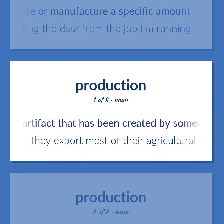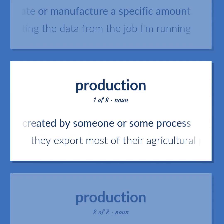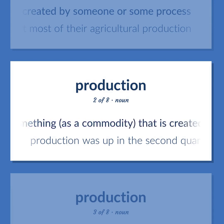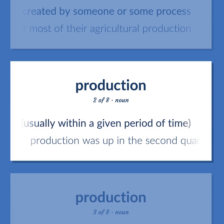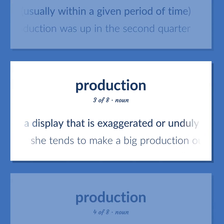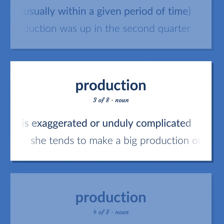Production: an artifact that has been created by someone or some process — 'They export most of their agricultural production.' Also, the quantity of something, as a commodity, that is created usually within a given period of time — 'Production was up in the second quarter.' Also, a display that is exaggerated or unduly complicated — 'She tends to make a big production out of nothing.'